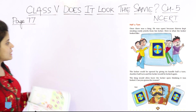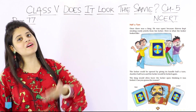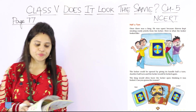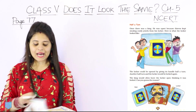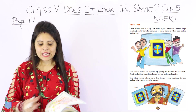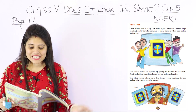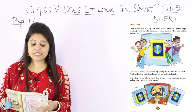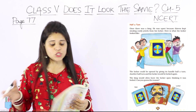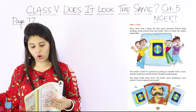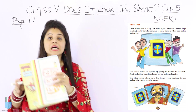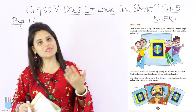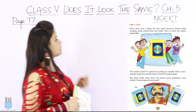Now let's read what we have in the story. You can insert the page here. If you have your books, it is very big. The story says: Once there was a king who was upset because thieves kept stealing costly jewels from his locker. Here is what the locker looked like. The king was very worried because thieves kept stealing from his locker.